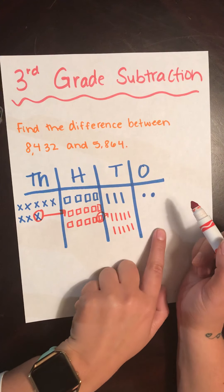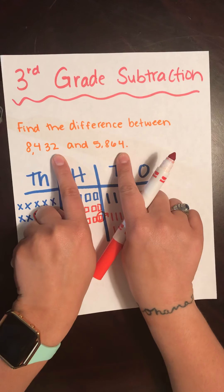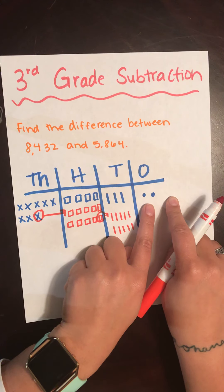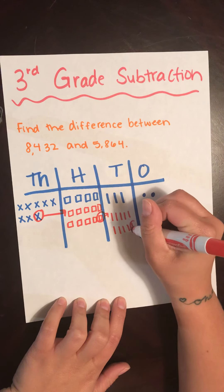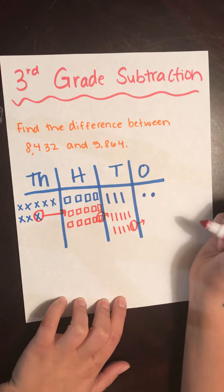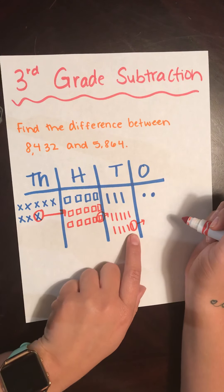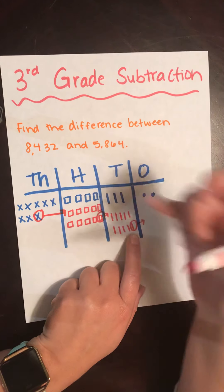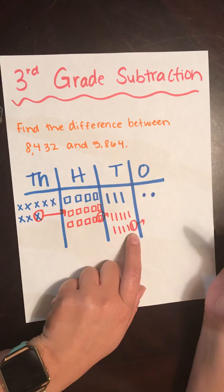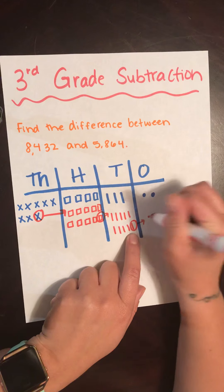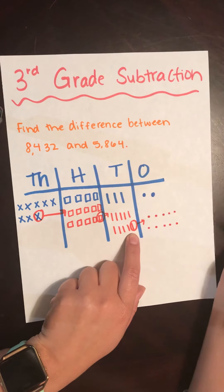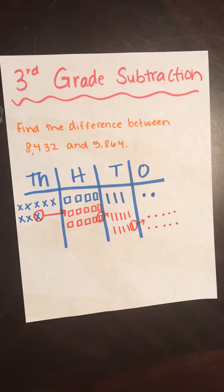And finally, is 2 bigger than 4? It is not. I can't take 4 from this side, so once again we have to regroup. I'm going to take another 10 and bring it over to my ones. It takes 10 ones to make a 10 — it takes 10 $1 bills to make a 10 — so it will take 10 ones to make this 10. So now I need to bring over my 10: 1, 2, 3, 4, 5, 6, 7, 8, 9, 10. So now that we have regrouped, we can finally start subtracting.